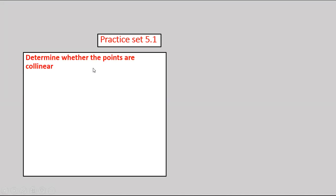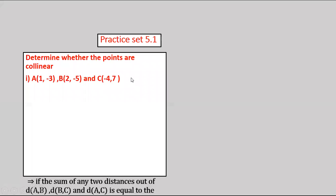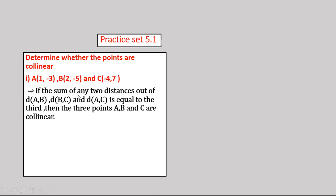Question number 2 in Practice Set 5.1: determine whether the points are collinear. First, given points A(1, −3), B(2, −5), and C(−4, 7). If the sum of any two distances out of AB, BC, and AC equals the third, then the three points A, B, and C are collinear; otherwise they are not collinear.